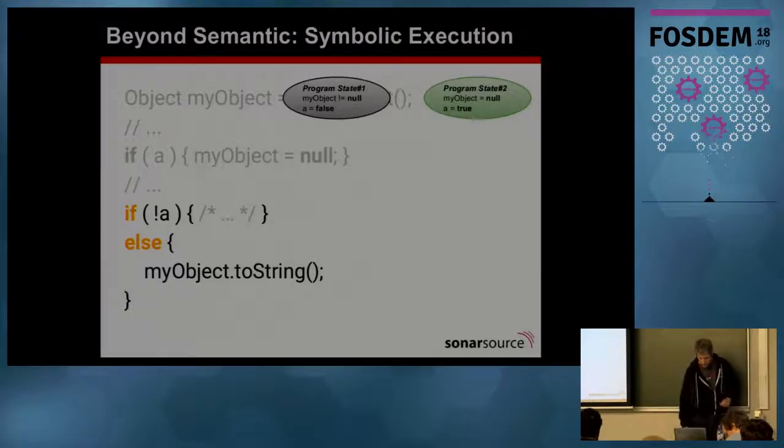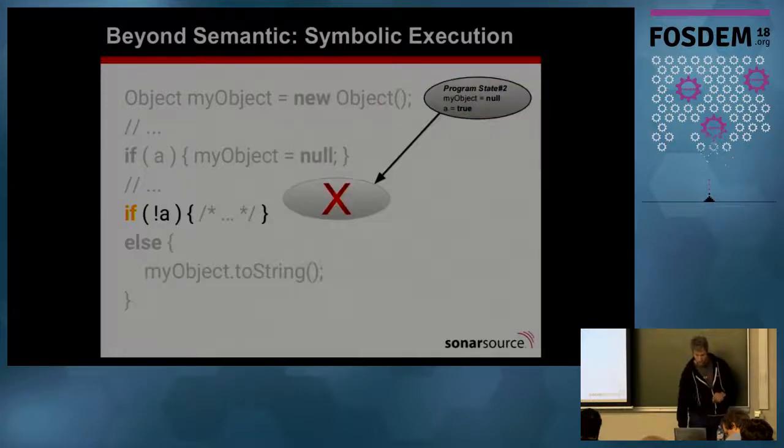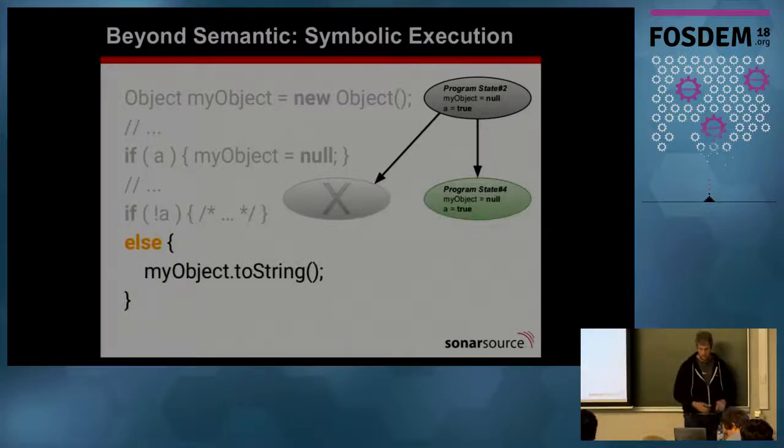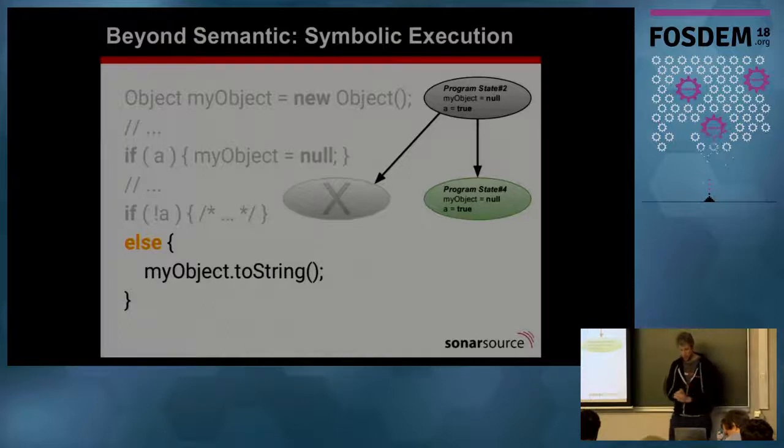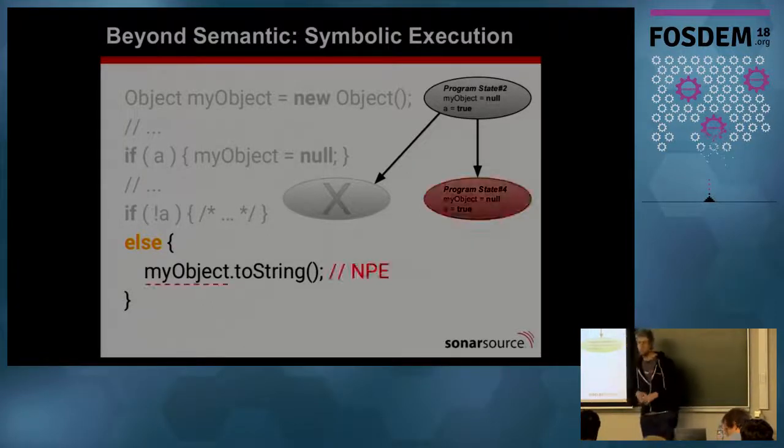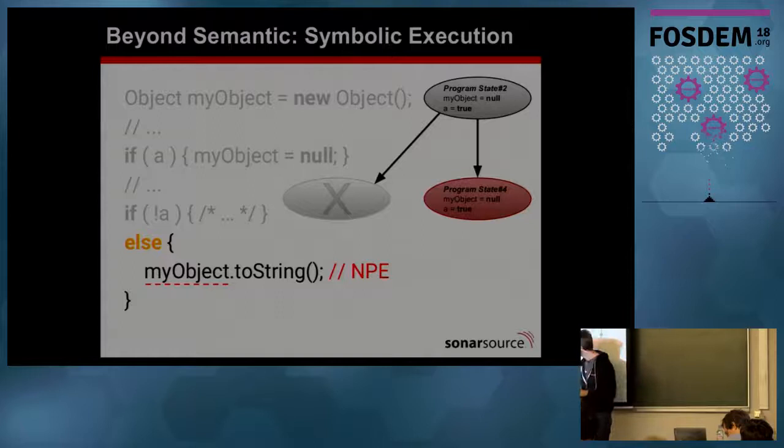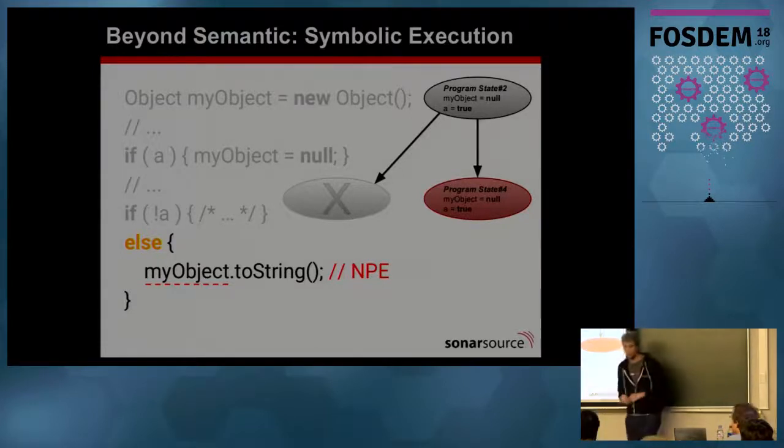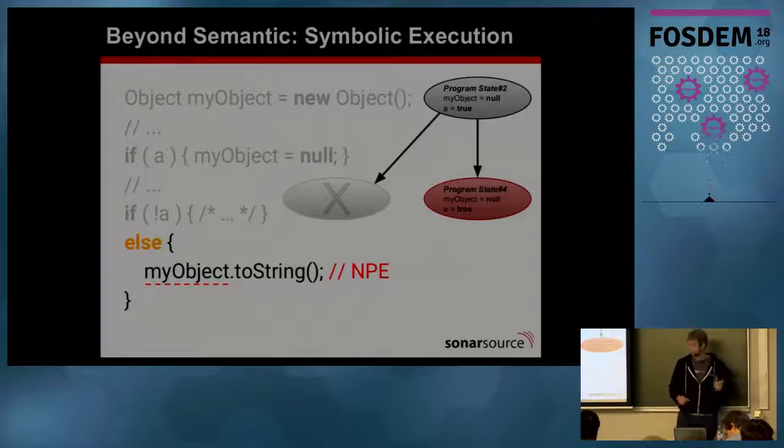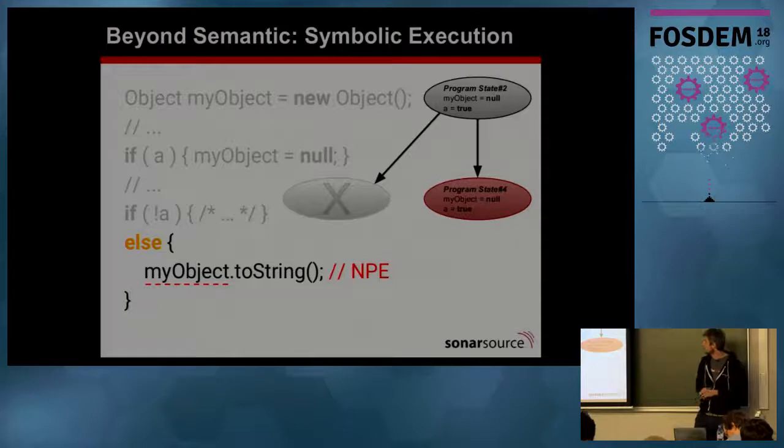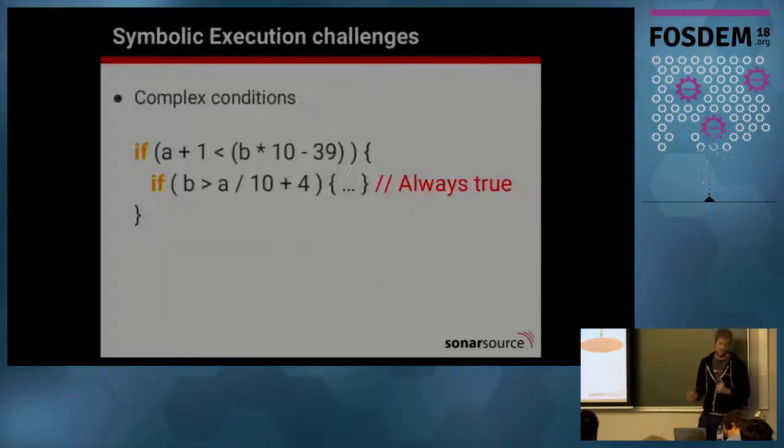Let's look at the other state. The other state, we have my object which is null, A is true. So the true part of the if is actually not feasible, so we don't explore anything. And on the second part, we actually have my object which is null, A is true. And oh, hold on, we dereference my object. It's null. We have an issue here. And so we're able to detect the null pointer exception like that. And we are context sensitive. We follow those paths as well, and that helps us to find those issues. This is really an interesting technique. It gave a lot of very nice results.